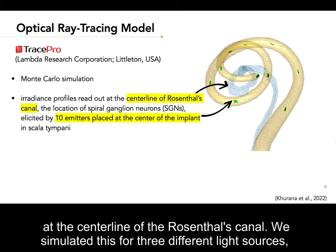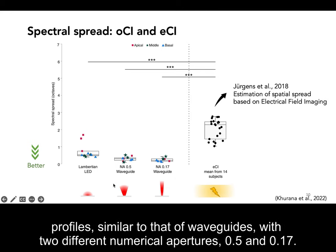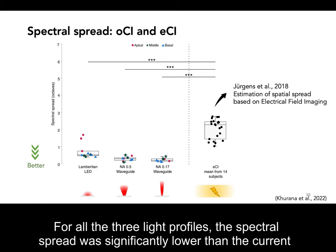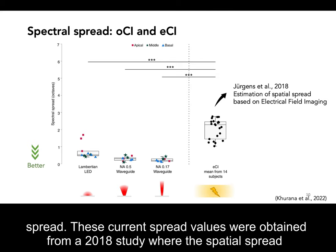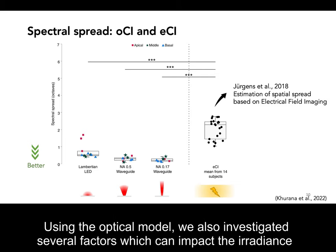We simulated this for three different light sources: one with a Lambertian profile similar to LEDs, and two light sources with Gaussian profiles similar to waveguides with two different numerical apertures of 0.5 and 0.17. For all three light profiles, the spectral spread was significantly lower than the current spread. These current spread values were obtained from a 2018 study where spatial spread values were estimated using electrical field imaging with 14 human cochlear implant users.